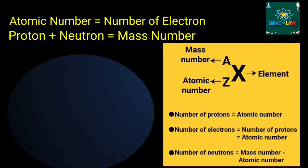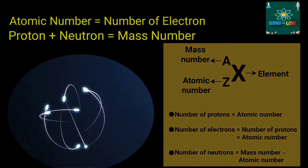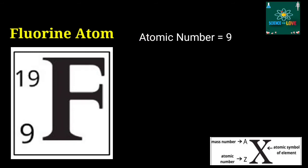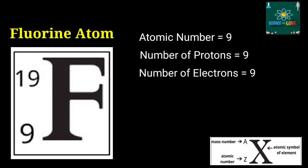To illustrate further, let's see the symbol for identifying the fluorine atom. With an atomic number of 9, fluorine has 9 protons. Since the number of protons must be the same as the number of electrons, it has also 9 electrons.